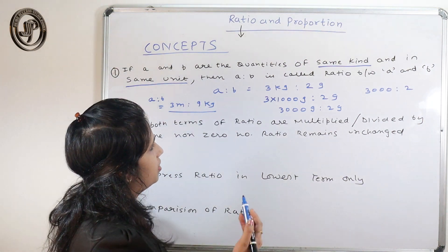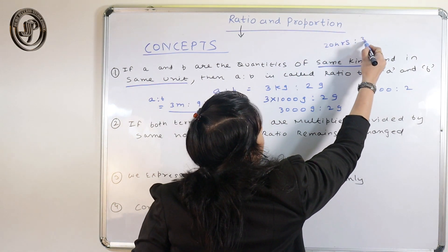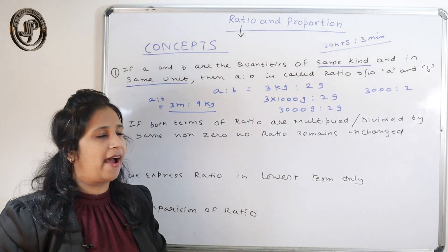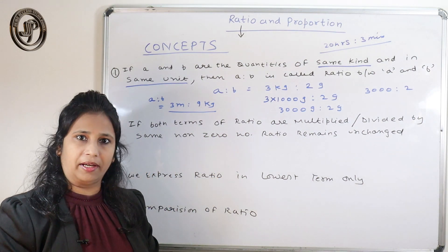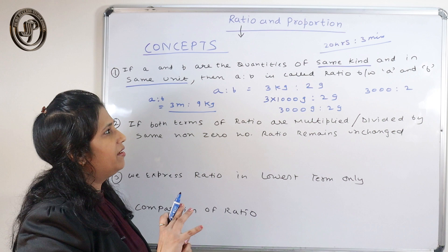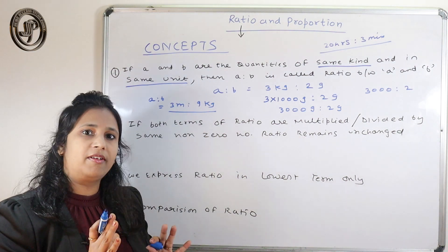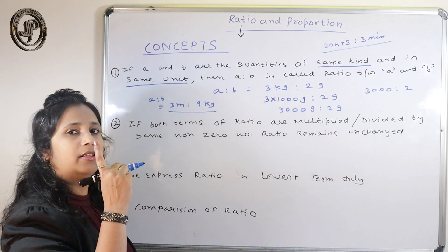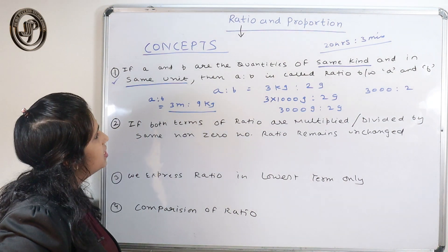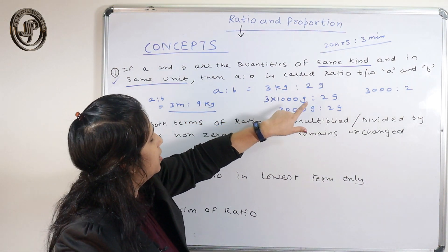For example, 20 hours is to 3 minutes can be expressed as a ratio because both have the unit of time. We can convert hours into minutes or minutes into hours to find the ratio. Always remember: to express a ratio, the quantities must be of the same kind and the same unit.